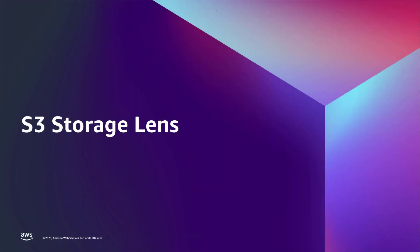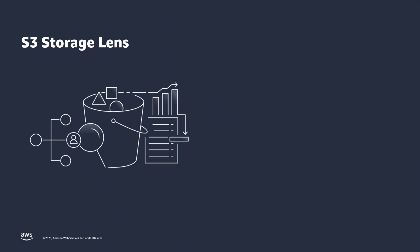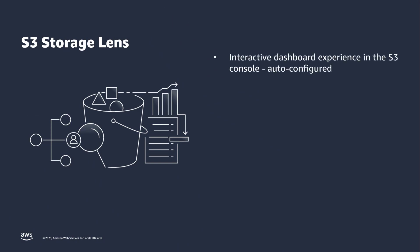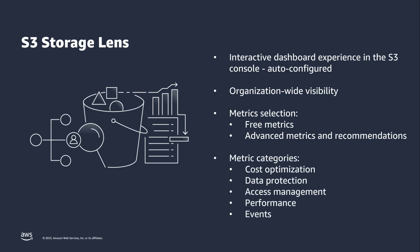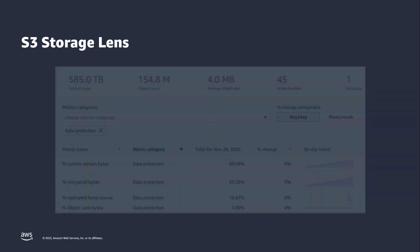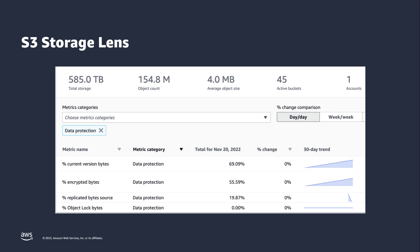Finally, let's take a look at how you can use S3 Storage Lens to gain visibility into your S3 data protection status. S3 Storage Lens provides an interactive dashboard built into the S3 console that is automatically configured for all customers. It provides an organization-wide view of S3 storage across all of your accounts and buckets. Many metrics are included free of charge, as well as an optional paid tier of advanced metrics and recommendations. S3 Storage Lens metrics are organized into categories that align with key use cases, including data protection. Here's a quick look at some of the data protection metrics available in S3 Storage Lens, including versioning, object lock, and replication.